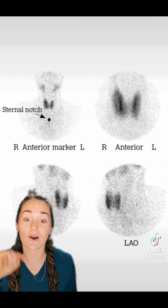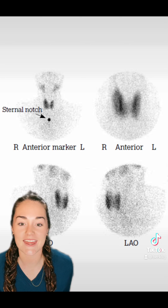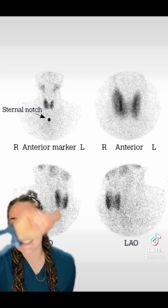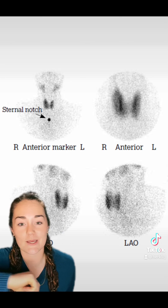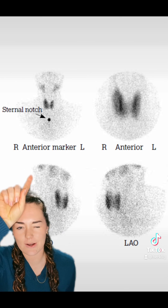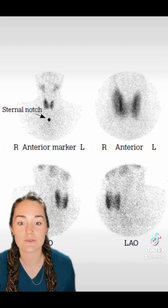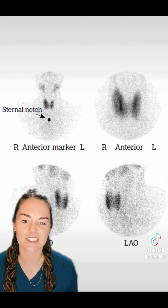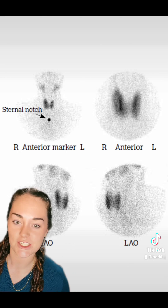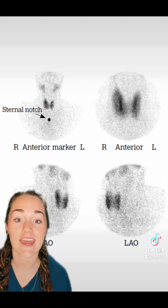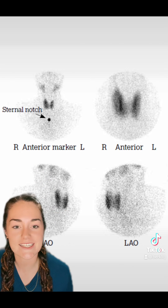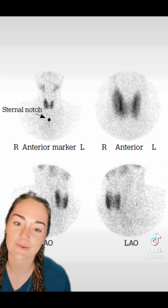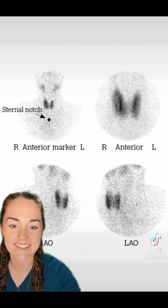We also get to take some cool pictures when we do a thyroid scan. Up here, these are all normal pictures. This little arrow right there is to mark your sternal notch — that's just for localization. And then these little butterfly pictures here, that is what a normal thyroid would look like.